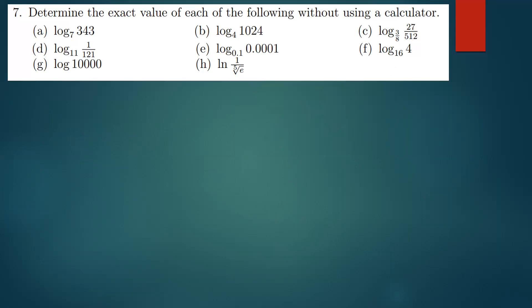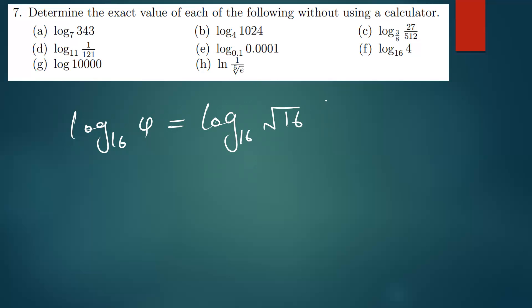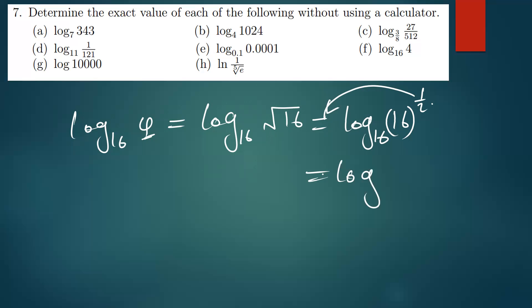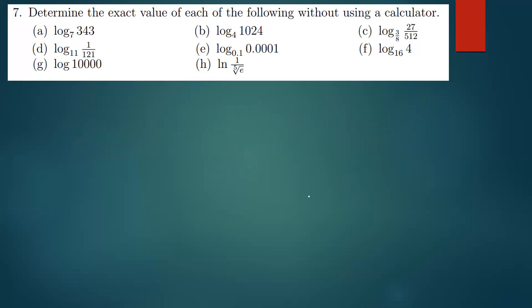The next one is log of 4, base 16. How can we express 4 in terms of 16? The square root of 16 equals 4, and the square root of anything is the same as raising it to the power one-half. So we write: log of 16 to the power 1/2, base 16. The 1/2 drops down: (1/2)·log(16) base 16 = 1/2 times 1 = 1/2.